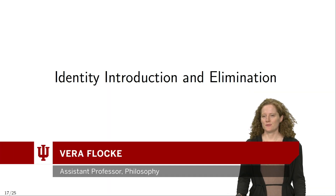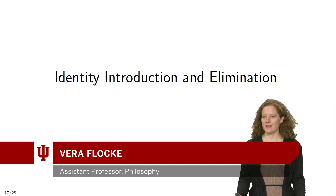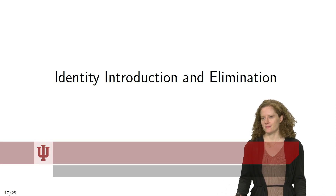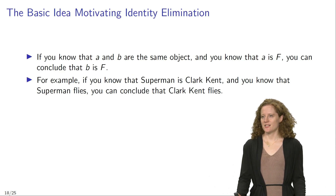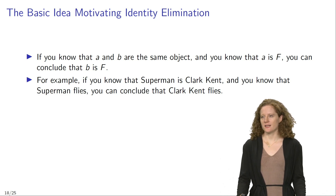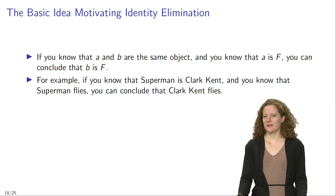The final two rules we are going to acquire in this course are identity introduction and identity elimination. The basic idea motivating identity elimination is as follows: if you know that A and B are the same object and you know that A is F, then you can infer that B is F.